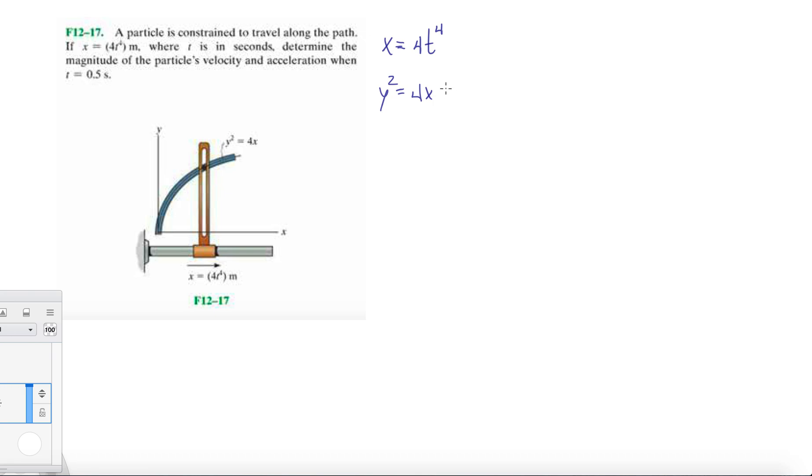We'll substitute the x equation in here so it's 16t to the fourth, and then square both sides to get 16t to the fourth. We'll get our y position which is 4t squared.